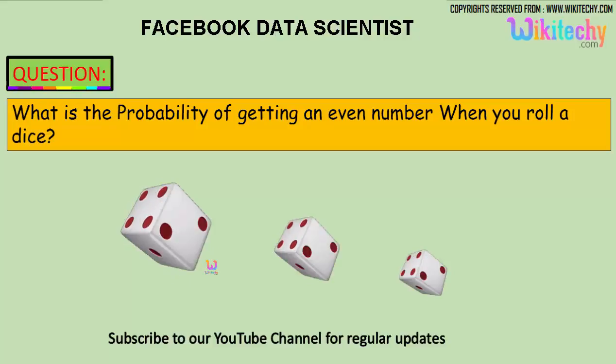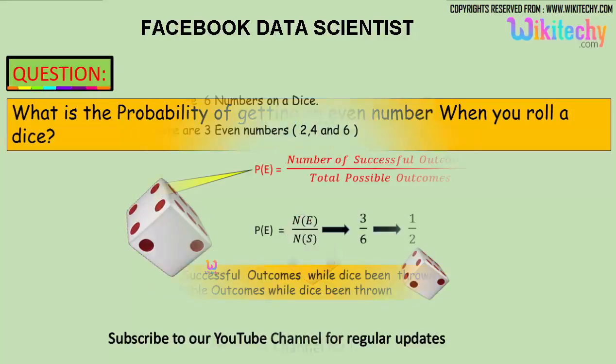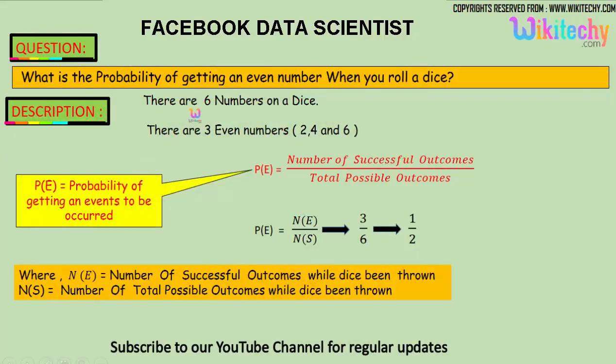What is the probability of getting an even number? That is the question. The answer is there are six numbers on a dice and we got three even numbers: two, four, and six.